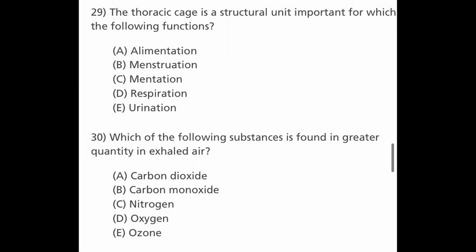Next question: which of the following substances is found in greater quantity in exhaled air? Options are A. Carbon dioxide, B. Carbon monoxide, C. Nitrogen, D. Oxygen, and E. Ozone. The answer is C, nitrogen, which is found in greater quantity in exhaled air.